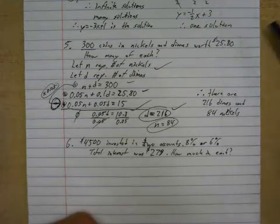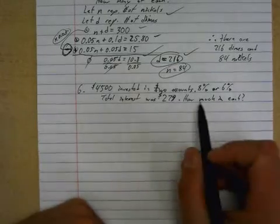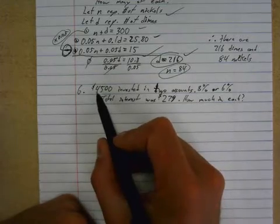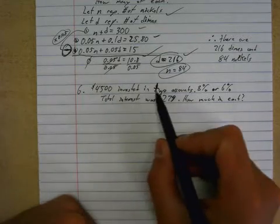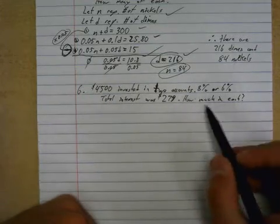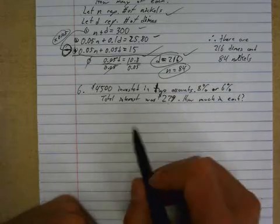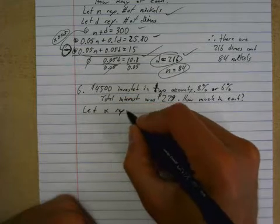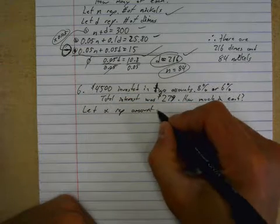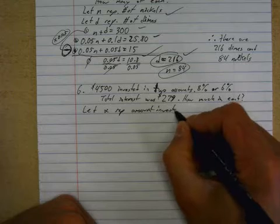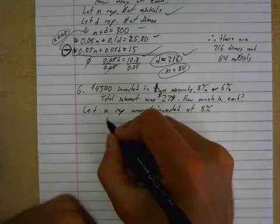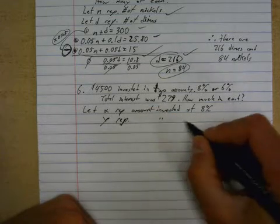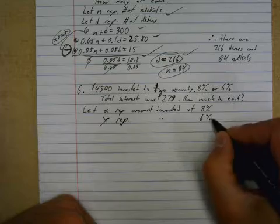Alright, next equation. Interest equations - I find these ones to be some of the toughest ones for people to get their heads around, although it's not that tough. $4500 is invested in two accounts, one of them is making 8%, one of them is making 6%. The total interest made is $279. How much is in each? Let x represent amount invested at 8% and let y represent, blah blah blah, ditto, 6%.